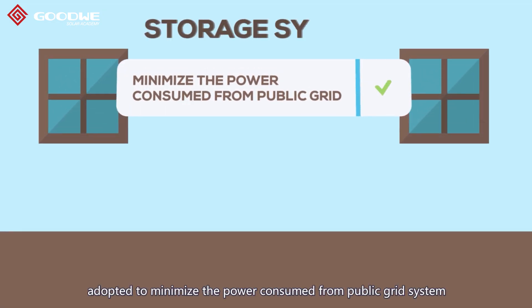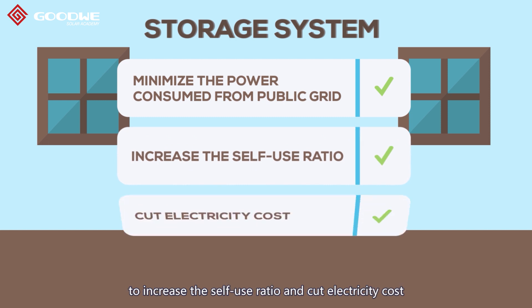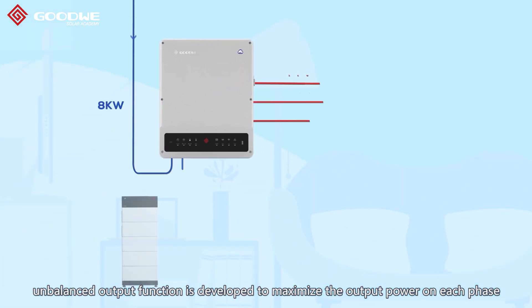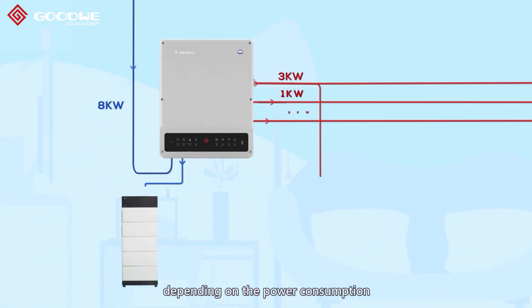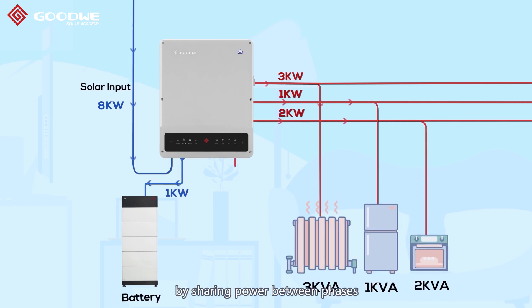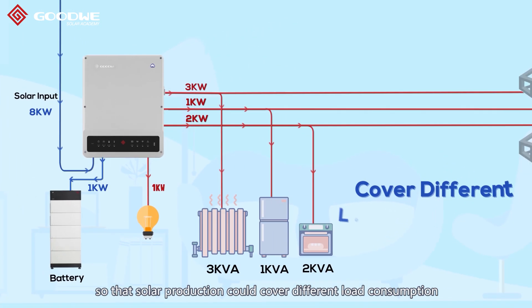In a self-use scenario, the storage system is adopted to minimize the power consumed from the public grid system, to increase the self-use ratio and cut electricity cost. Unbalanced output function is developed to maximize the output power on each phase depending on the power consumption, by sharing power between phases instead of exchanging with the grid.